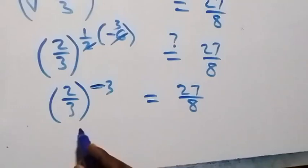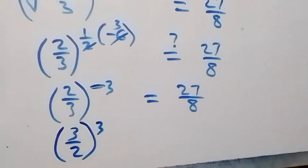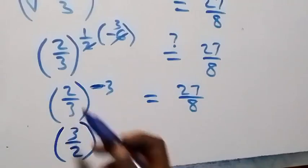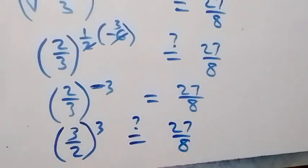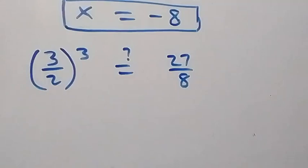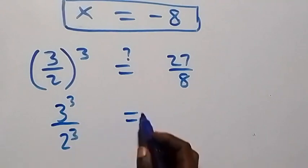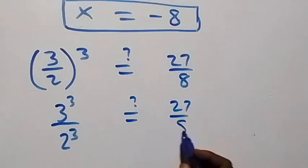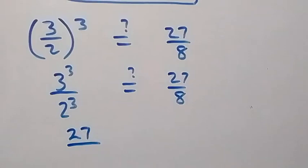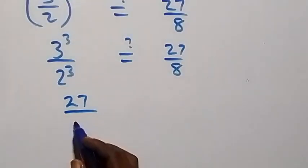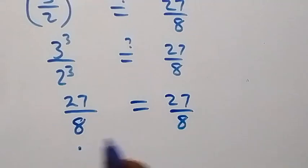Since the negative exponent serves as a reciprocal, we write this as (3 over 2) raised to power 3, which equals 27 over 8. This is the same as 3 raised to power 3 over 2 raised to power 3. Since 3 multiplied itself 3 times is 27, and 2 multiplied itself 3 times is 8, we get 27 over 8 equals 27 over 8. Since left-hand side equals right-hand side, x equals minus 8 satisfies the given problem.